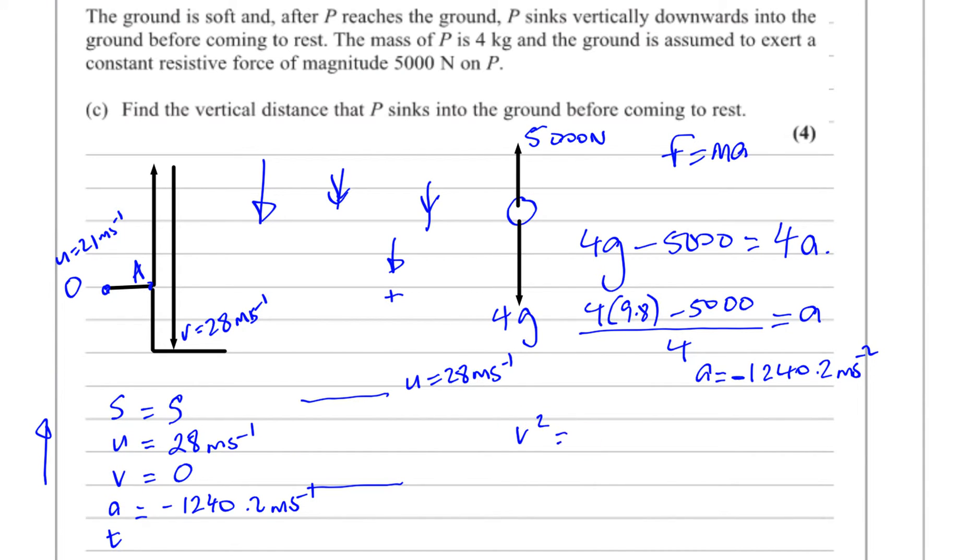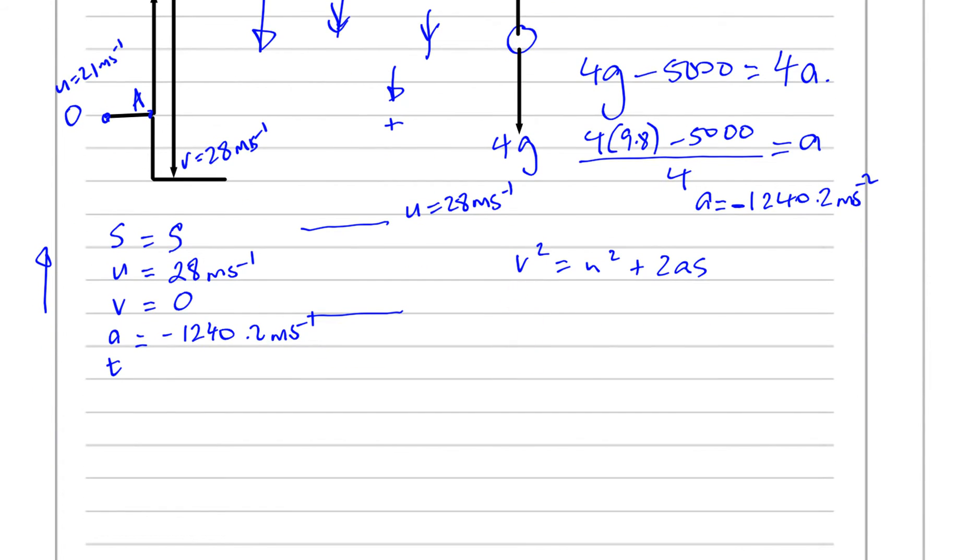So, if we use V squared equals U squared plus 2AS, we'll get our answer. V is 0, that becomes 0. U is 28, so that's 28 squared, plus 2 times, now, our A is negative 1240.2, and our S is what we have to find. So we can see that we'll end up with S as 28 squared, divided by positive 2 times 1240.2, because this will be a negative term, we'll go on to that side, then we divide by it.